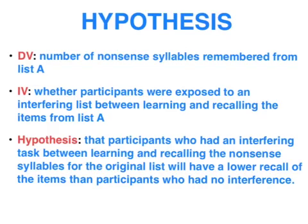My dependent variable is how many nonsense syllables the participants can recall. The independent variable — the variable I'm manipulating — is whether participants have been exposed to the interfering list B or not. My hypothesis is that participants who had an interfering task between learning list A and recalling it will have a lower recall rate than the control group who had no interference. When I talk about interference here, I mean learning a similar list, not simply the counting backwards distractor task.